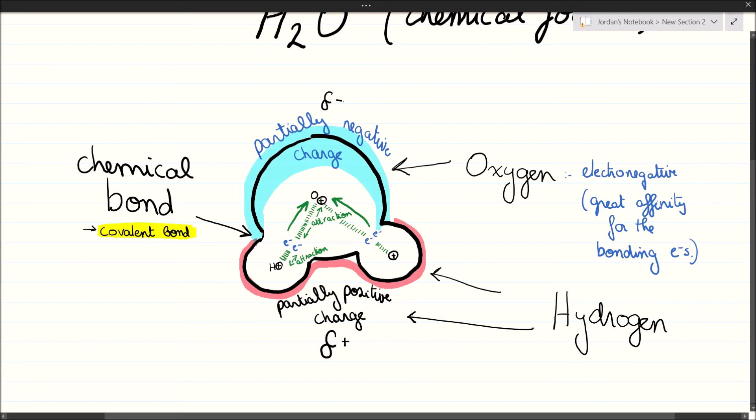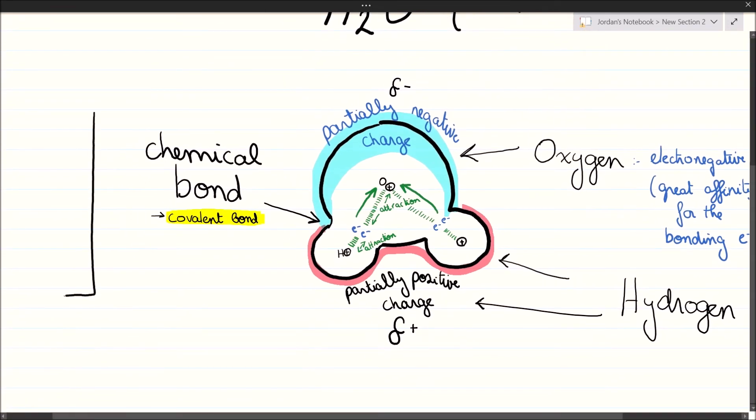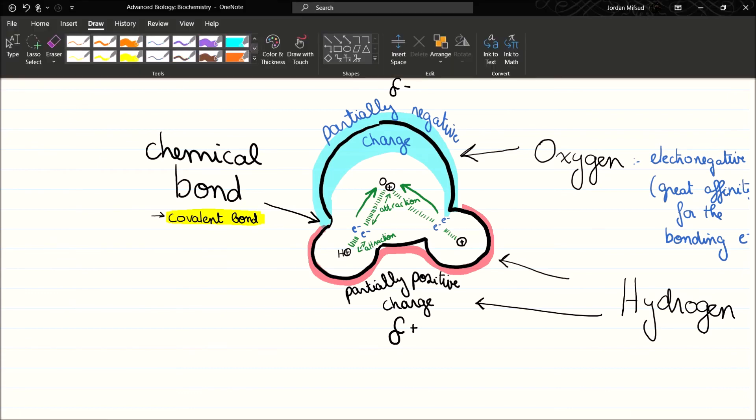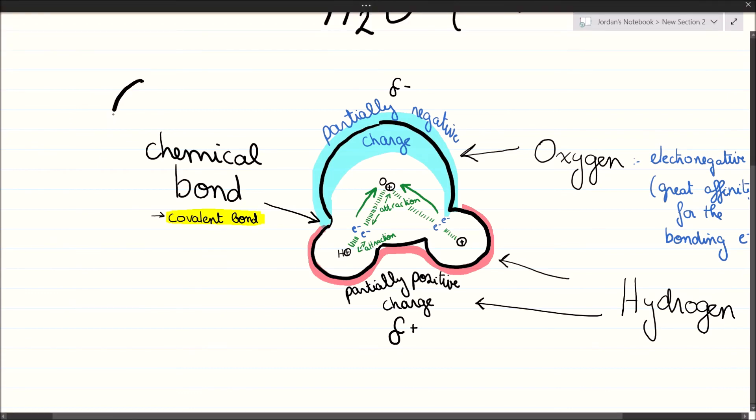So every water molecule has these two sides, or shall we call them poles—poles like the poles of a magnet, poles of opposite electric charge in this case.